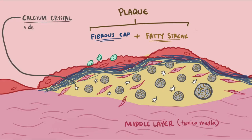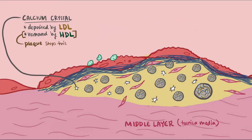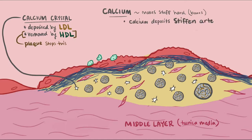Normally calcium is deposited into the vessel wall by low density lipoproteins and is then removed by high density lipoproteins. The accumulation of plaque in the vessel interferes with the ability of high density lipoproteins to remove calcium, so a buildup of calcium occurs in the vessel wall and it crystallizes. This deposit of calcium is what stiffens the walls of the arteries — calcium makes stuff hard, which is why your bones are full of calcium.